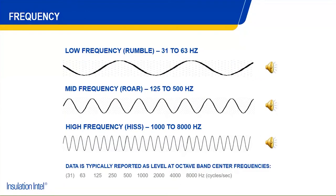Frequency: you can see typical frequencies here — low, medium, and high — and what the typical wavelengths look like. The human ear has the ability to hear from 20 Hz all the way up to 20,000 Hz. Our ears tend to be most sensitive to the 500 to 5,000 Hz range — that's the sweet spot of human hearing. When we're looking at controlling sounds, many metrics focus on a fairly small slice of the frequency pie, really concentrating on that 500 to 5,000 range.